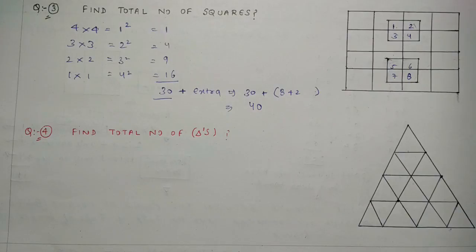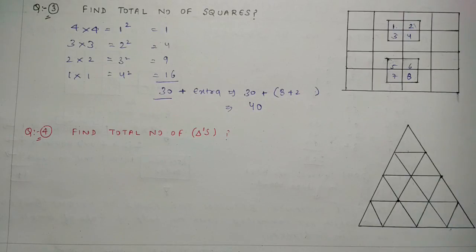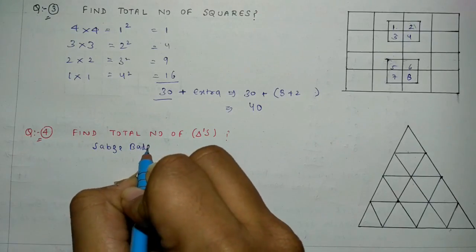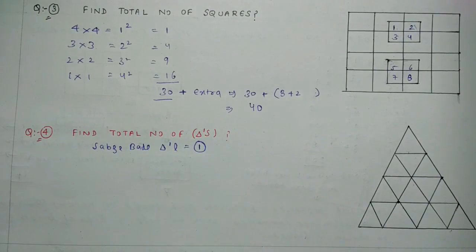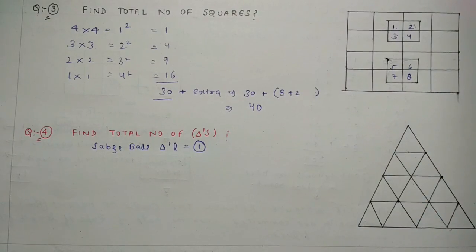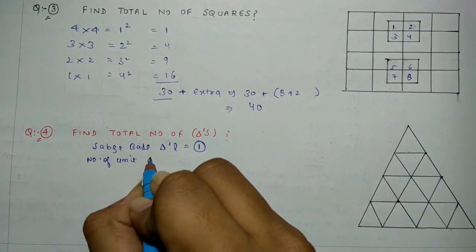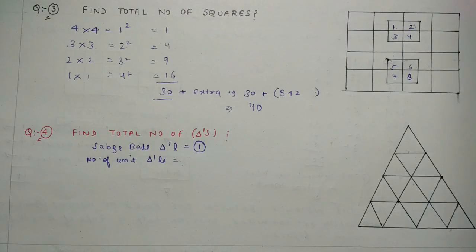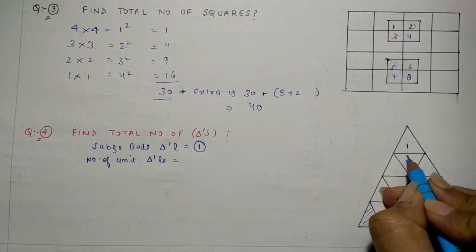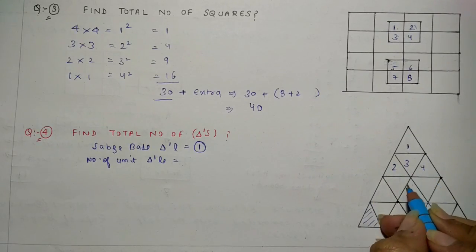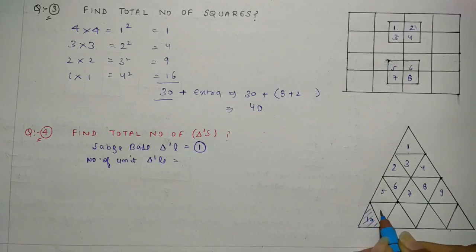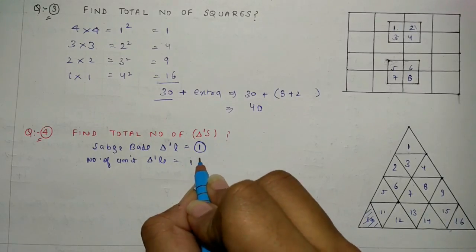Now question four: find the total number of triangles in this figure. Yahan par squares wali approach se nahi chalenge — thodi alag approach lagani hai. Sabse pehle sabse bade order ki baat karte hain. Sabse bada triangle ek hi hai. Uske baad number of unit triangles — matlab jiske base se triangle form ho raha hai. Is type ke kitne triangles hain — 1, 2, 3, 4, 5, 6, 7, 8, 9, 10, 11, 12, 13, 14, 15, and 16. So number of unit triangles is 16.